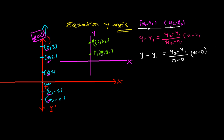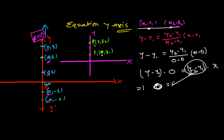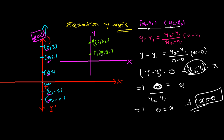Now, (y minus y1) multiplied by (zero minus zero) equals (y2 minus y1) times x. The left side becomes zero, so we get zero equals (y2 minus y1) times x. Dividing both sides, we get zero over (y2 minus y1) equals x, which gives us x equals zero. This is the equation of the y-axis.